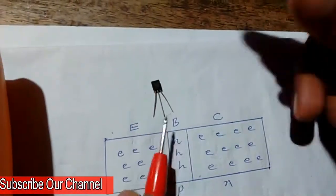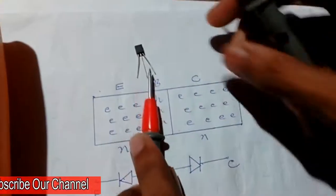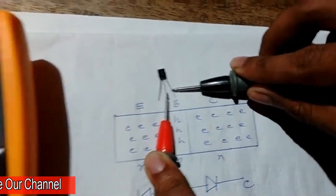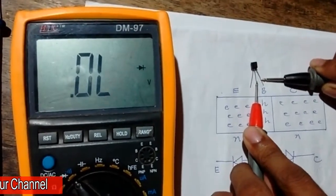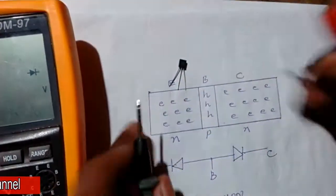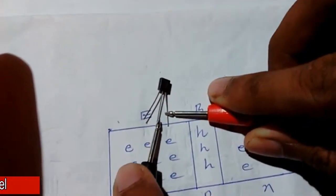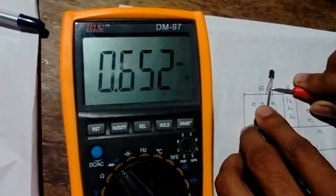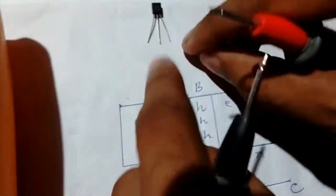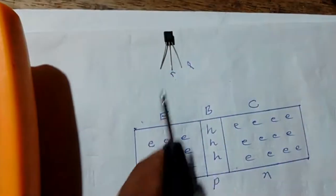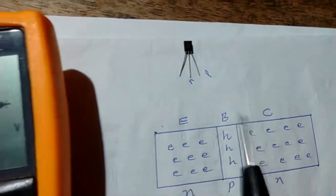Now let's identify this next transistor. First, connect the positive terminal of the DMM to the base and the negative terminal to another pin — you can see this is an open circuit. Then reverse the connection and you can see there is a voltage drop. That means this terminal is P and the other is N.